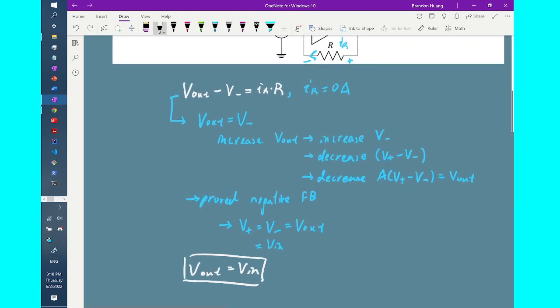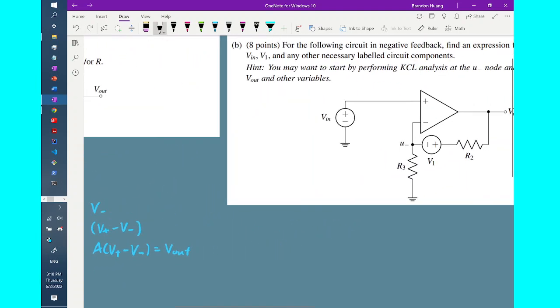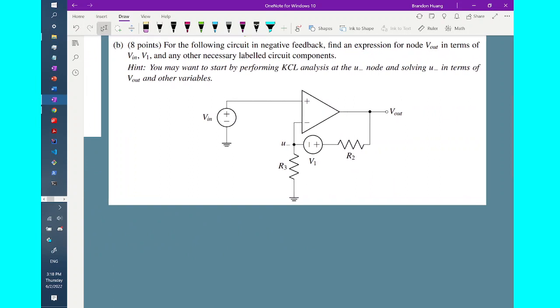So there we have solved part A of the question. And now let's move on to part B, which lets us look at a slightly more complicated circuit. So in this circuit, we want to find an expression of node V_out in terms of the node voltages V_in and V_1 and other circuit components as well, maybe R2, maybe R3.